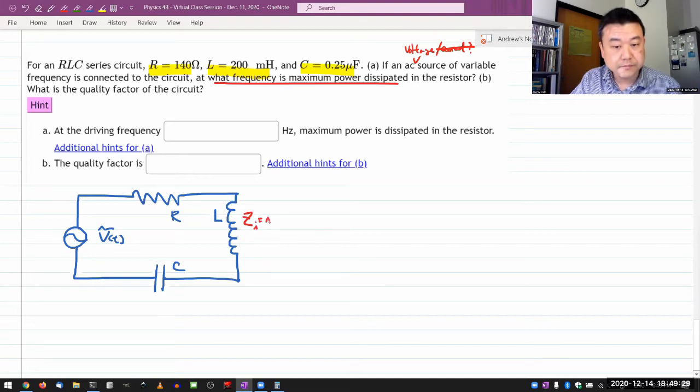So inductor has impedance i omega L, and capacitor has impedance 1 over i omega C.